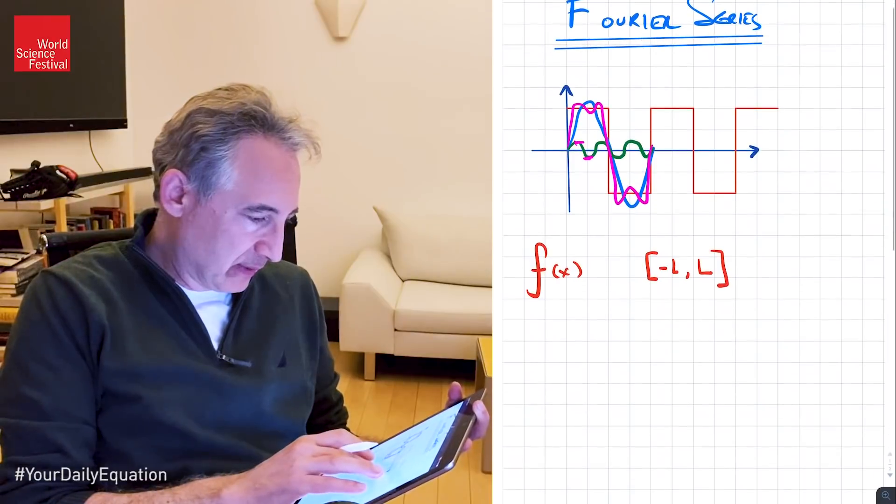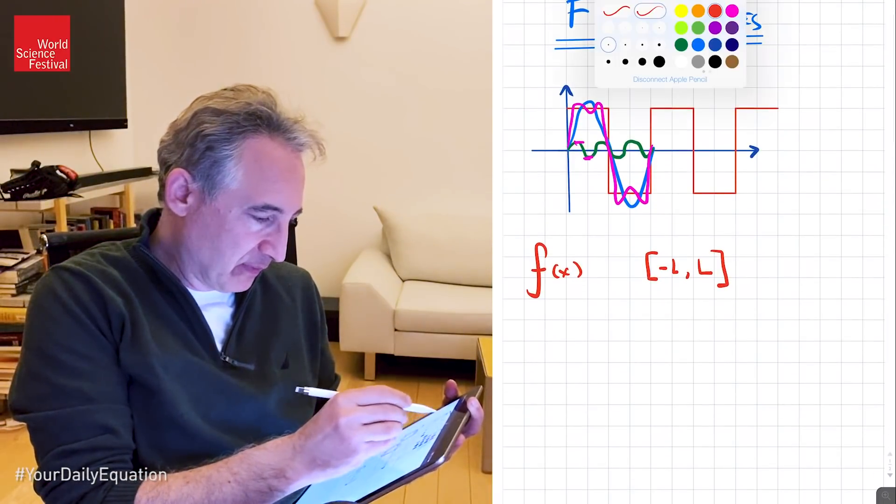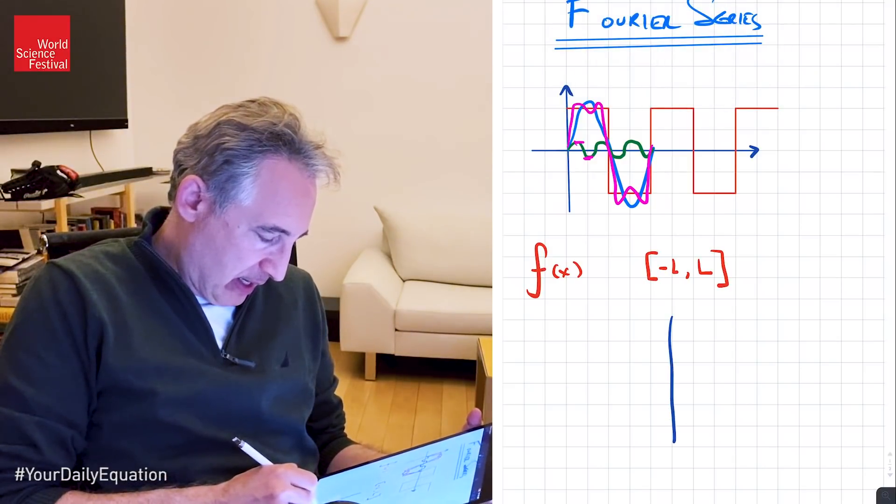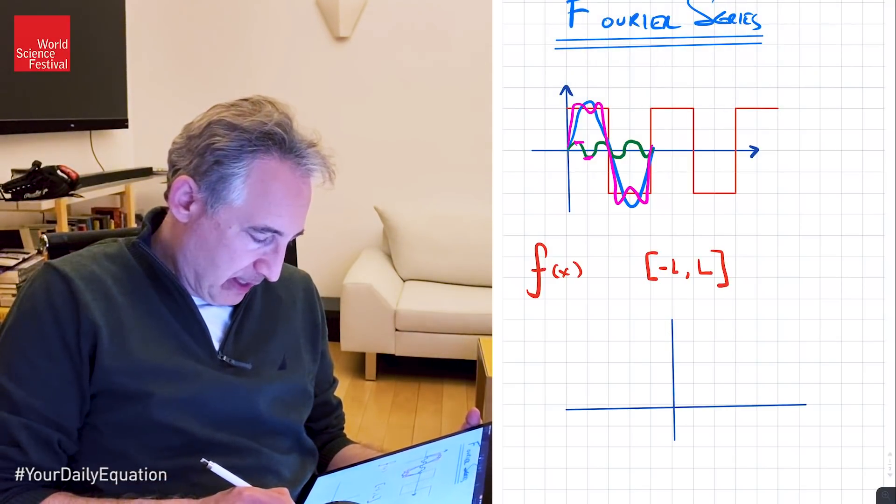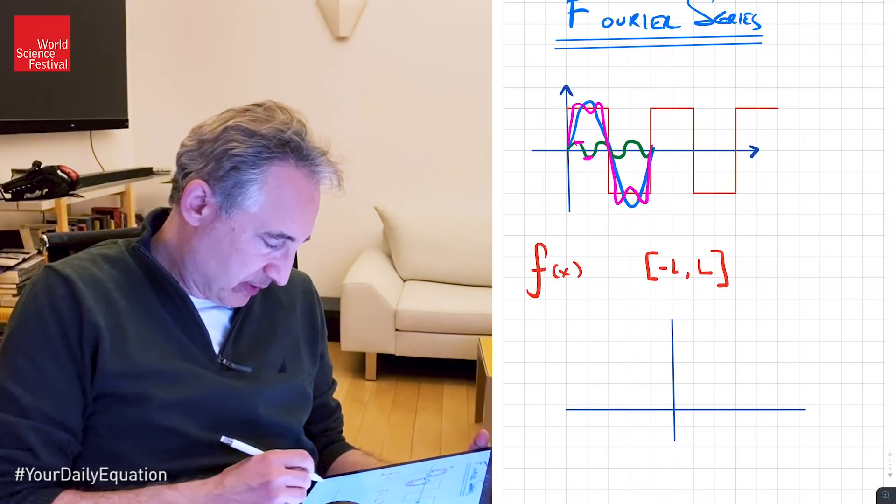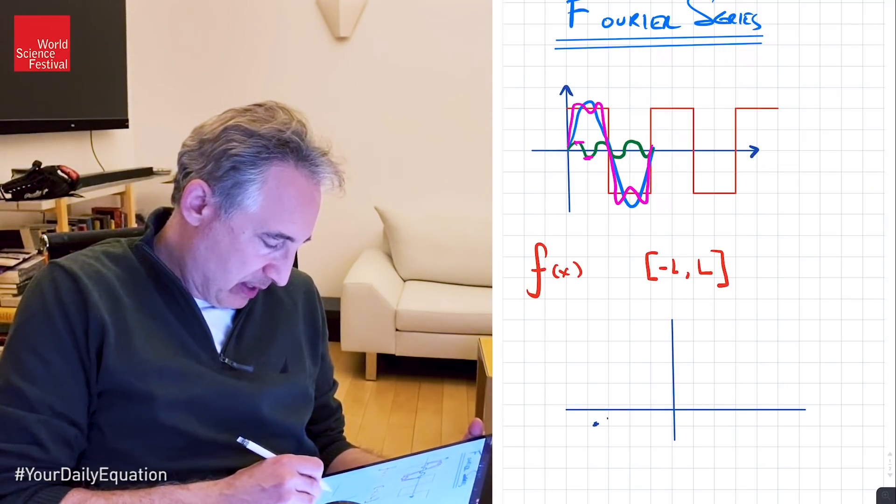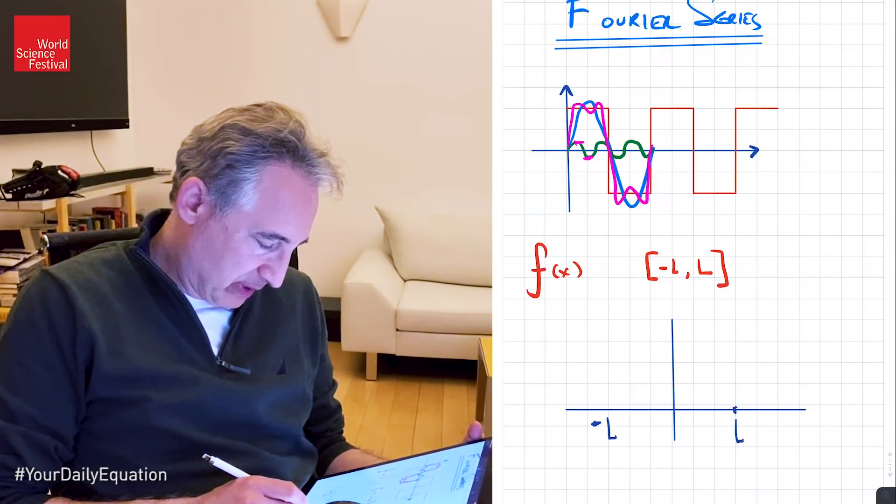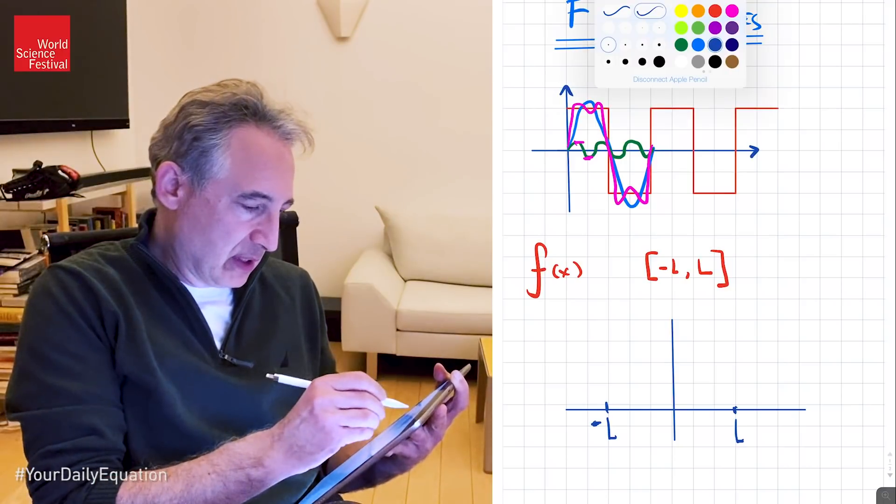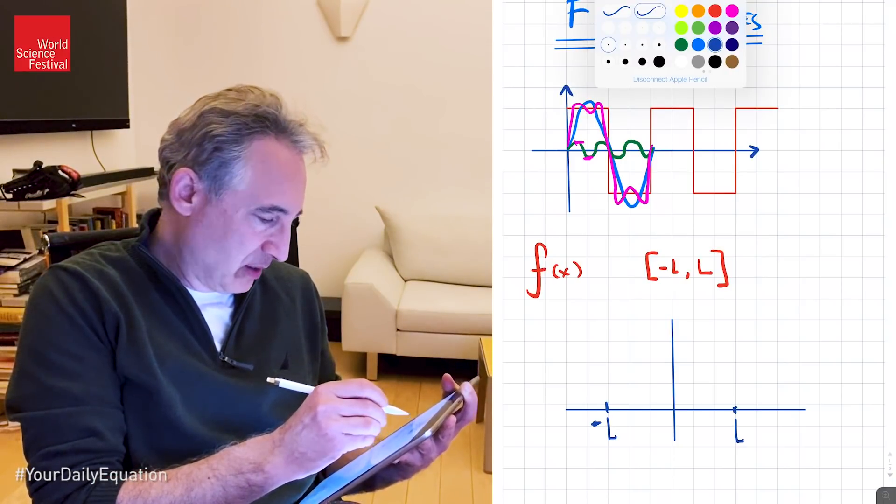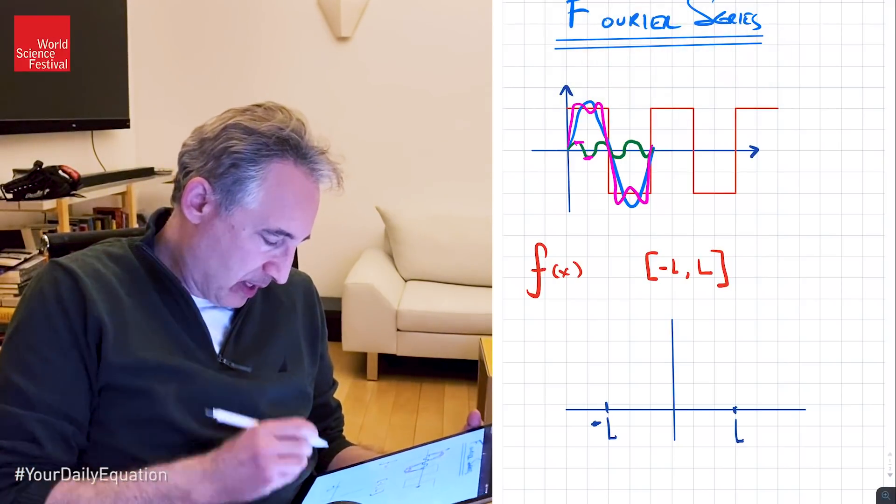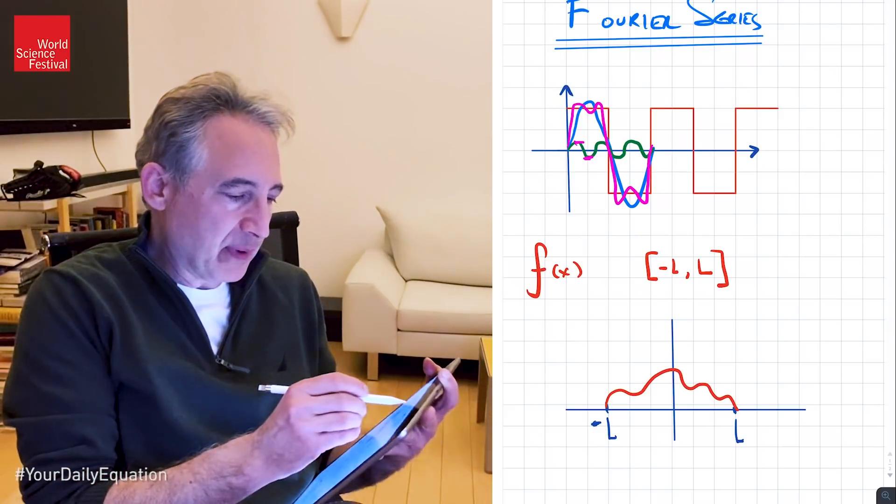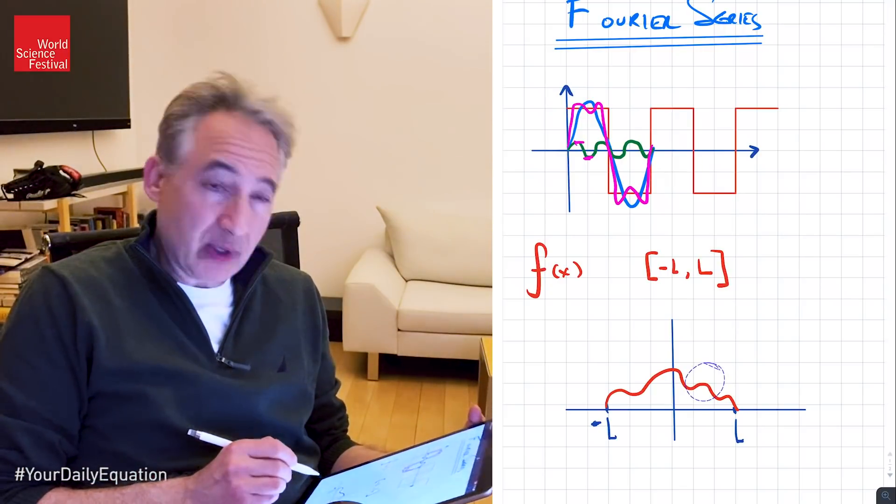What that means is its value at minus L and its value at L will be the same. And then it just periodically continues the same wave shape, just shifted over by the amount 2L along the x-axis. So again, just so I can give you a picture for that before I write down the equation. So imagine then that I have my axis here.